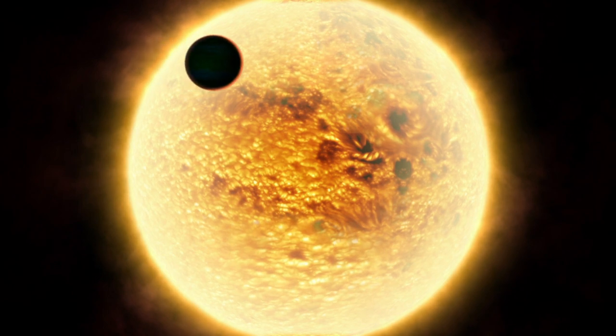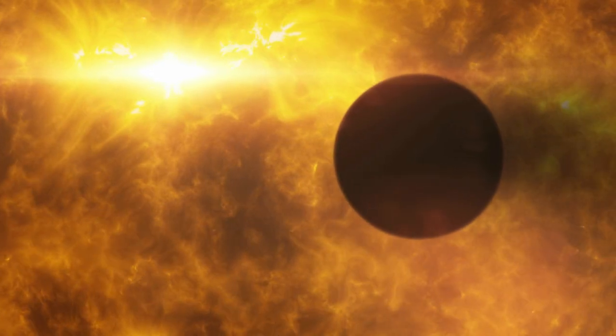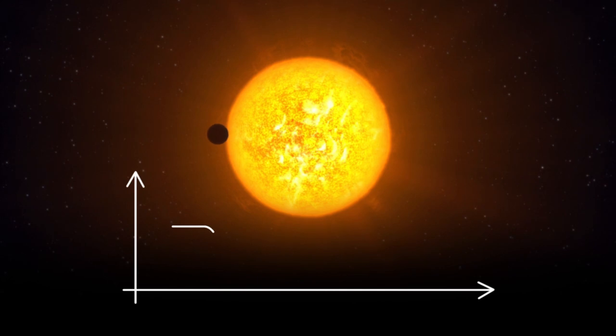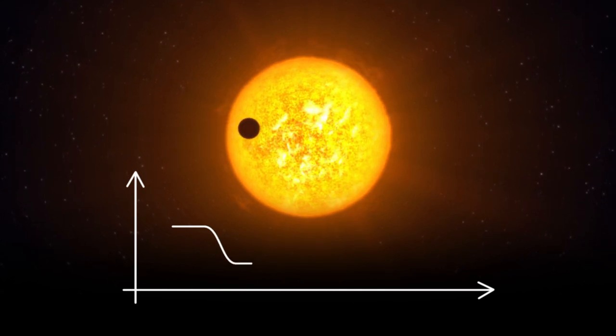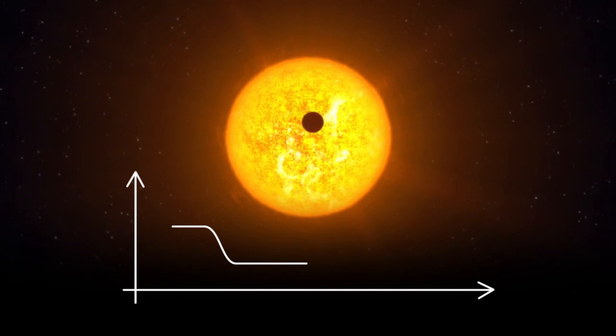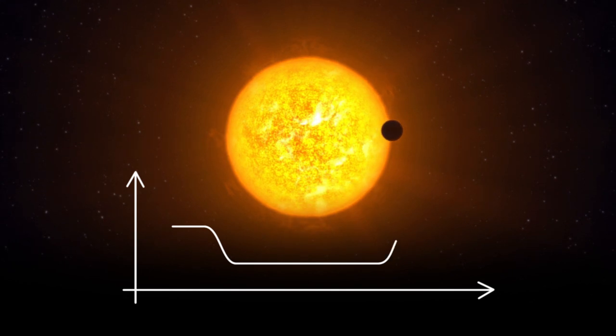Transits offer one of the best chances to study exoplanets. This is when a planet crosses between its host star and Earth, temporarily reducing the star's apparent brightness. The duration and change in intensity of the light curve give astronomers clues about the planet's size and orbit.